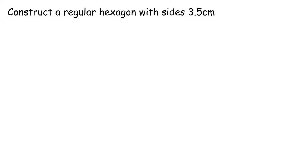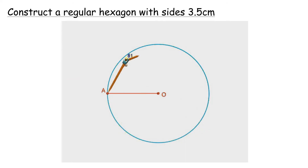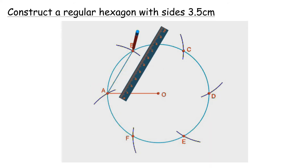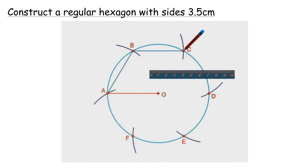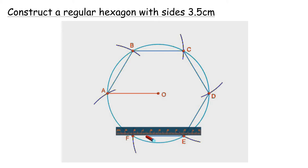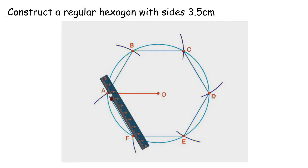Construct a regular hexagon with sides 3.5 cm. Construct a circle with a radius of 3.5 cm. Mark one point at the circumference and label it A. Construct a curve with radius 3.5 cm from A and label it B. Repeat: from B label C, and continue until F. Draw lines AB, BC, CD, DE, EF, and FA to form a regular hexagon.